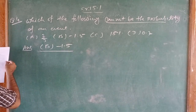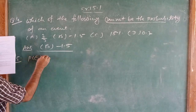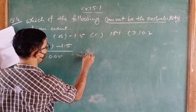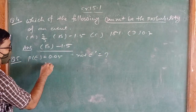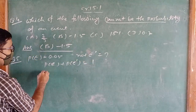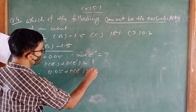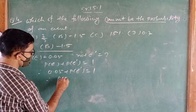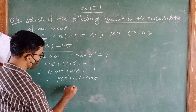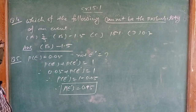Question number 5: P(E) = 0.05. What is the probability of not E? We know that P(E) + P(E dash) = 1. So 0.05 + P(E dash) = 1, therefore P(E dash) = 1 − 0.05 = 0.95.